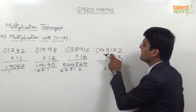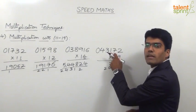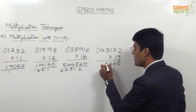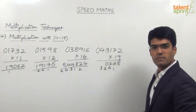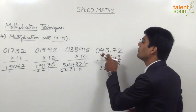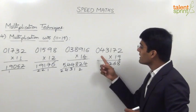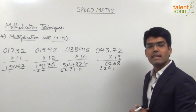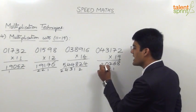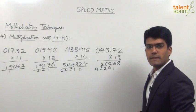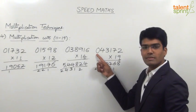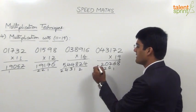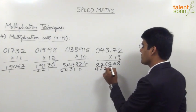Next step: 9 into 3 is 27, plus previous digit 1 is 28, plus carry 2 is 30 — write 0 in the answer, carry 3. Next: 9 into 4 is 36, plus previous digit 3 is 39, plus carry 3 is 42 — take 2 in the answer, carry 4. Last step: 9 into 0 is 0, plus previous digit 4 is 4, plus carry 4 is 8. So the answer here is 8 lakhs 20268.